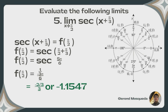Problem 5: the limit of sec(x + π/3) as x approaches π/2. We substitute π/2 for x, giving π/2 plus π/3, which simplifies to 5π/6. We then evaluate sec(5π/6), which equals 1 over the cosine of 5π/6. Using a calculator, the final answer is negative 2√3 over 3, or approximately negative 1.1547.